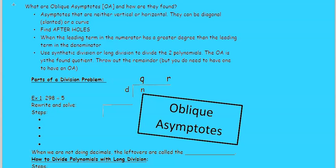Page 12, Oblique Asymptotes. What are oblique asymptotes, OA, and how are they found?